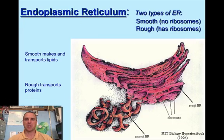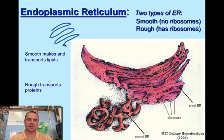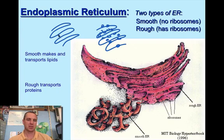The endoplasmic reticulum has two types: smooth and rough. If I were to draw on the test, smooth would look like this, and rough would look like this. There's not going to be a big difference in my drawing on the test. So this is smooth ER, and this is rough ER.